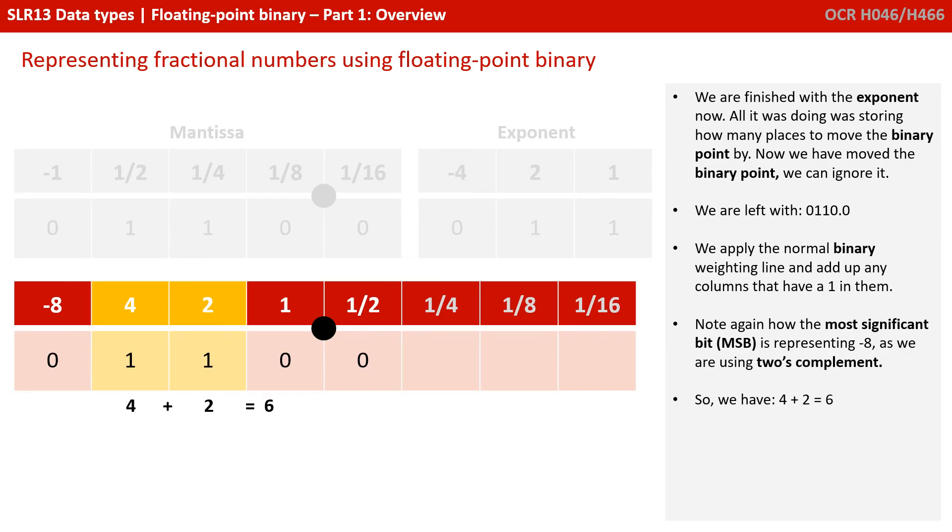So we're now left with the number 0110.0. We apply the normal binary weighting line and add up any columns that have a 1 in them. Again, note the most significant bit is representing minus 8, not positive, because we're using 2's complement. So we've got a 1 in the 4 column and a 1 in the 2. 4 plus 2 is 6. So that's what this actual number was representing, the binary value 6.